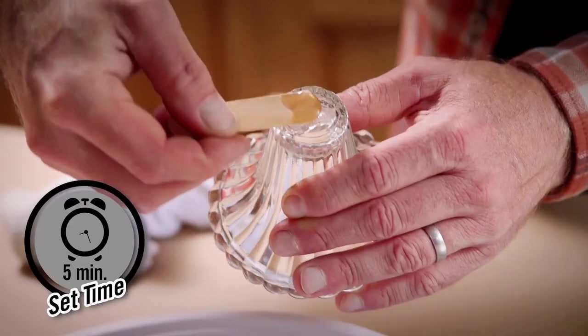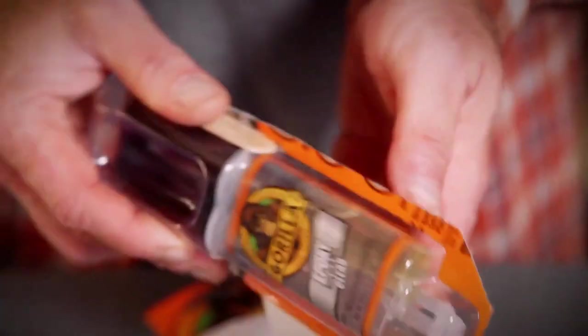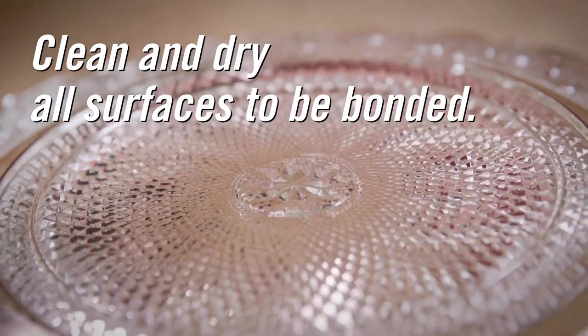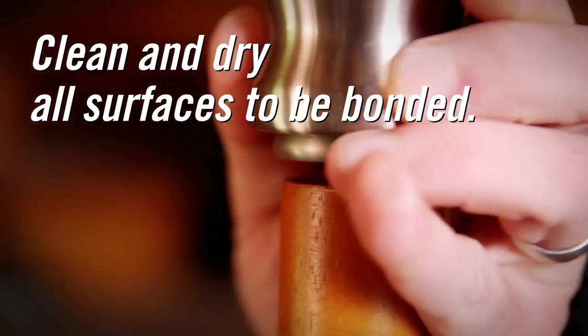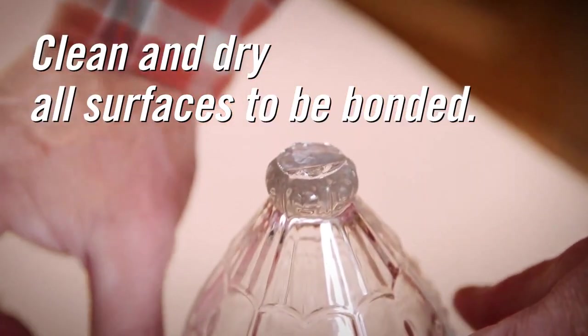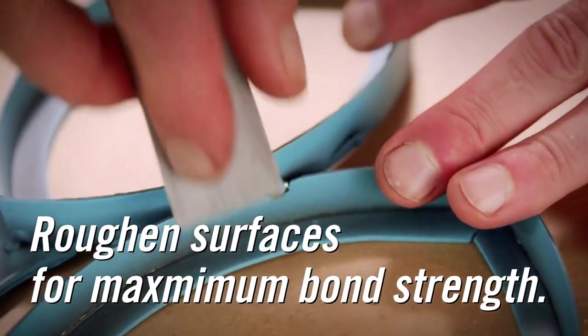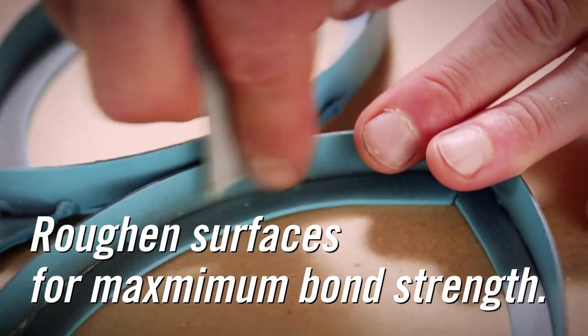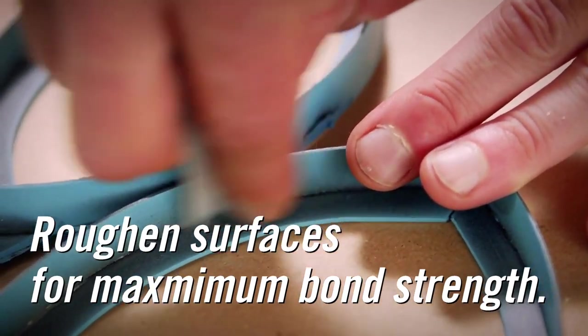Both products set up quickly, just follow these steps. First, make sure the surfaces of your project are clean, dry, and free from any grease or oil. For maximum bond strength on smooth surfaces, you may want to roughen up the surfaces with sandpaper before applying the epoxy.